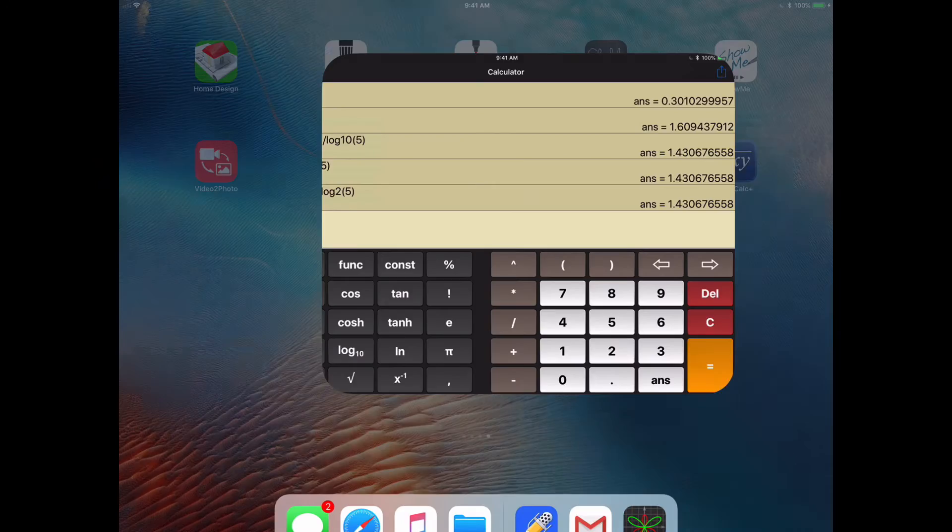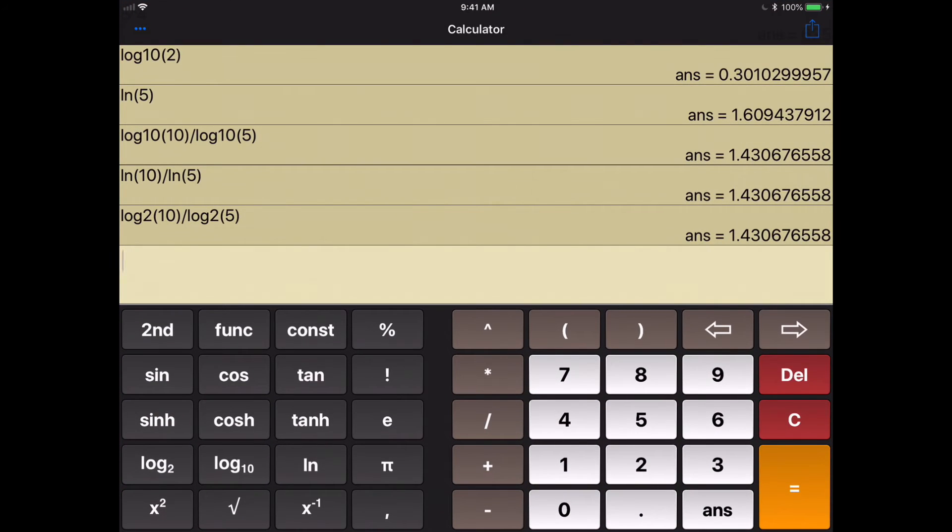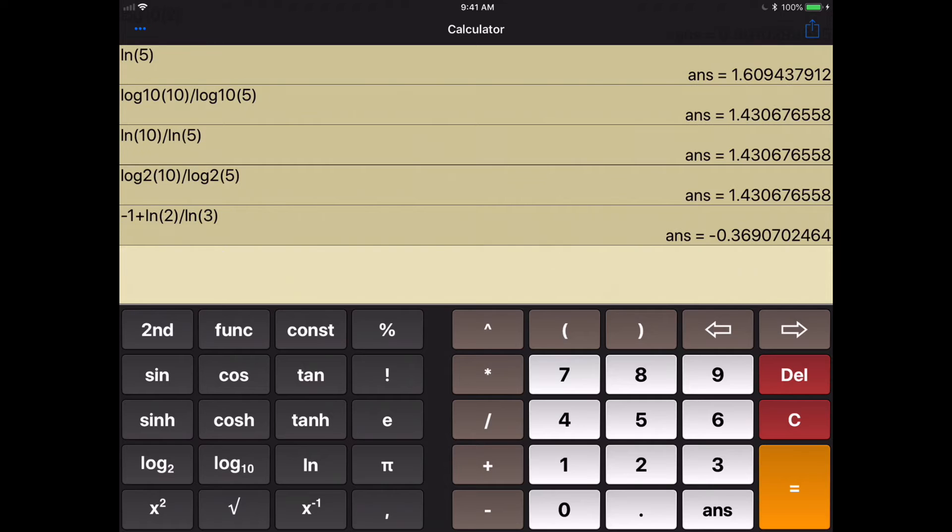So I'm going to go to my grapher here. So I would go, and I would enter this all at once. So I'd go negative 1 plus, we said it's the natural, and we said natural log of 2 divided by the natural log of 3. And we get negative, if we take it to the three decimal places, it would be negative 0.369. So let's record that.